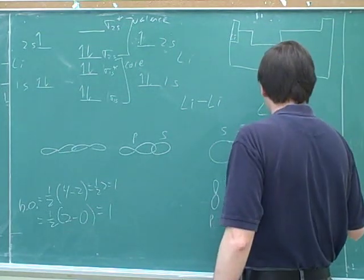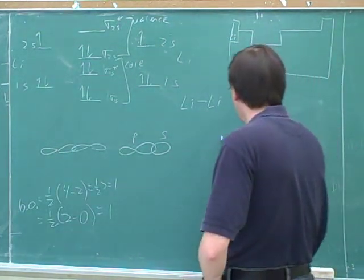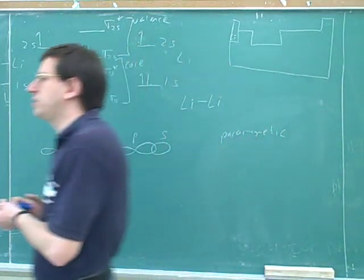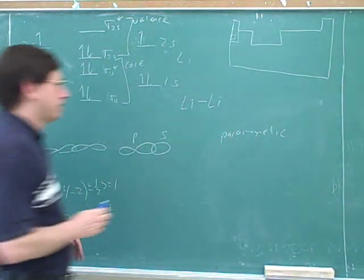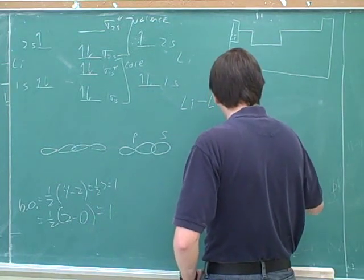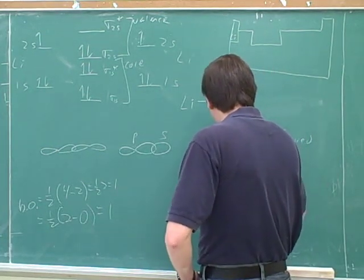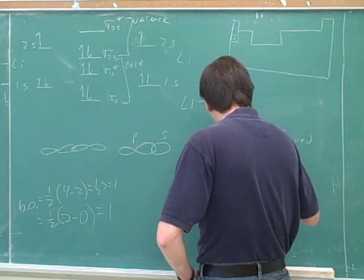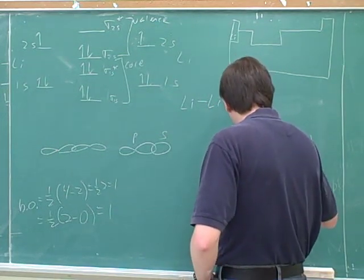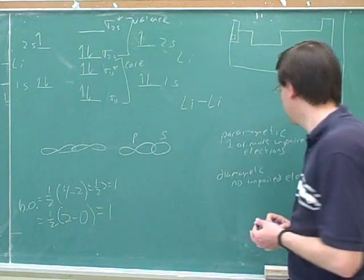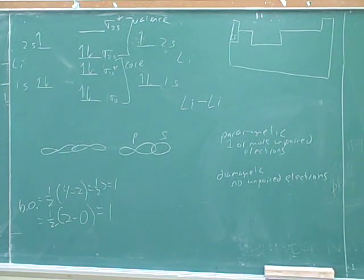Paramagnetic... Actually I think I talked about that last one. Yeah, I vaguely remember the term. Paramagnetic means that you have one or more unpaired electrons. And diamagnetic means that you have no unpaired electrons.